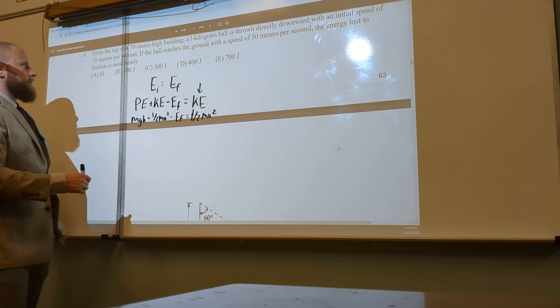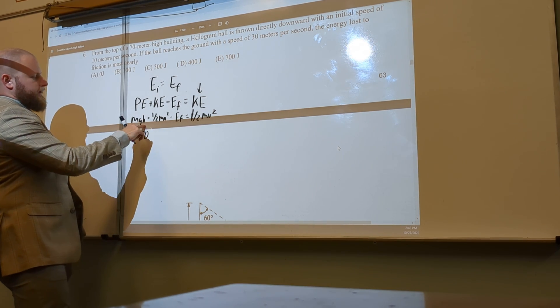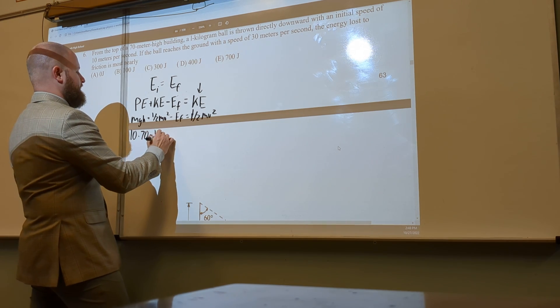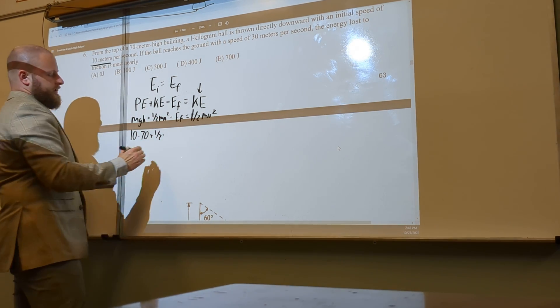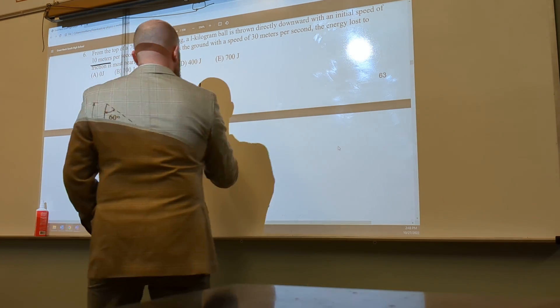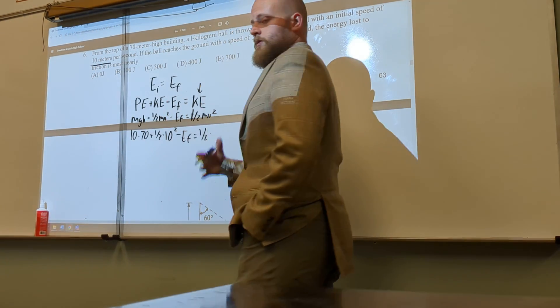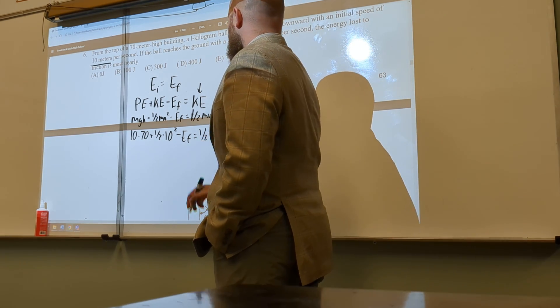M is just 1, so that's pretty easy. So I have 10 times 70, so it's gravity times height, plus 1/2 times my initial velocity is 10 squared minus Ef equals 1/2, mass is still 1, and then 30 squared.